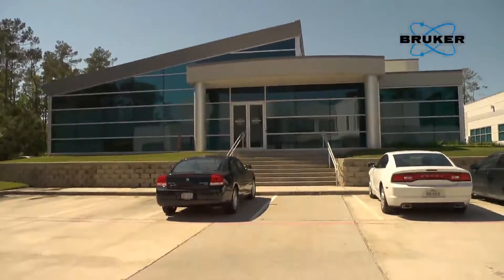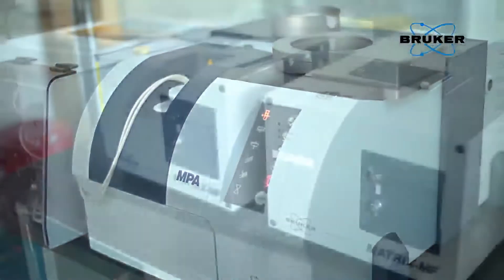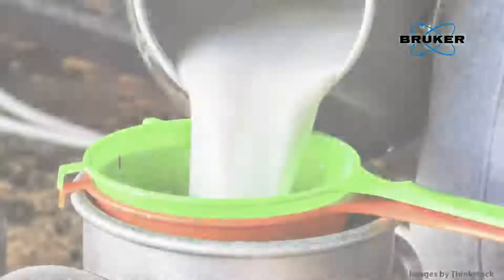Bruker's FT-NIR product line includes the Tango, the MPA, and Matrix-I spectrometers for lab and at-line applications, as well as the Matrix-F series for process control.